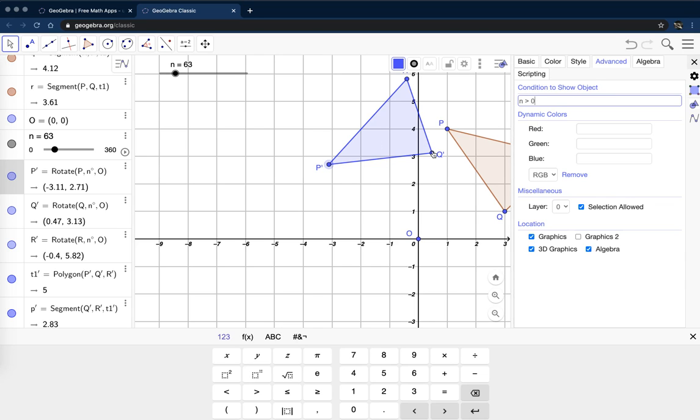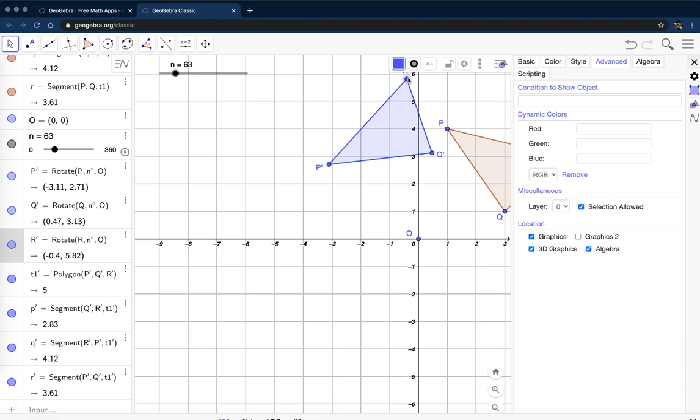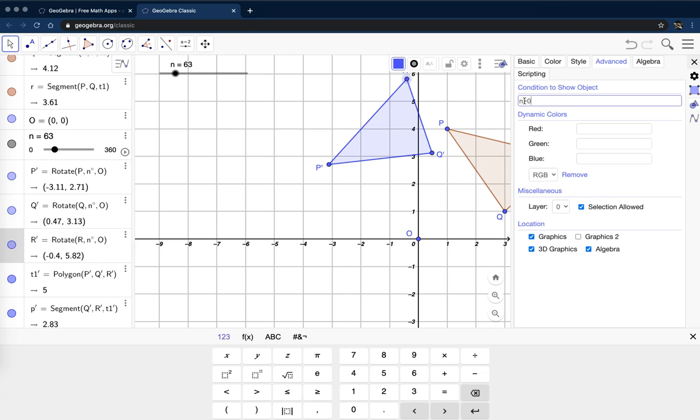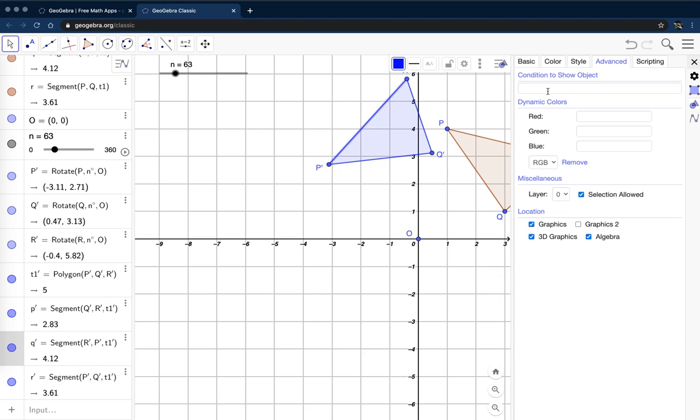So that was P. Let's click on Q and type the same thing. N greater than zero. Hit Enter. Let's click on R. N greater than zero. Let's click on each of the sides of the polygon and do this again.